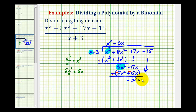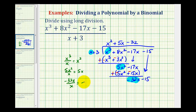Bring down the next term. Now we're only concerned about the first term of the divisor and this first term. We ask: what times x equals negative thirty-two x? The next term is minus thirty-two. Or, we take negative thirty-two x divided by x to get negative thirty-two. We multiply negative thirty-two by the divisor: negative thirty-two times x is negative thirty-two x, and negative thirty-two times three is negative ninety-six.